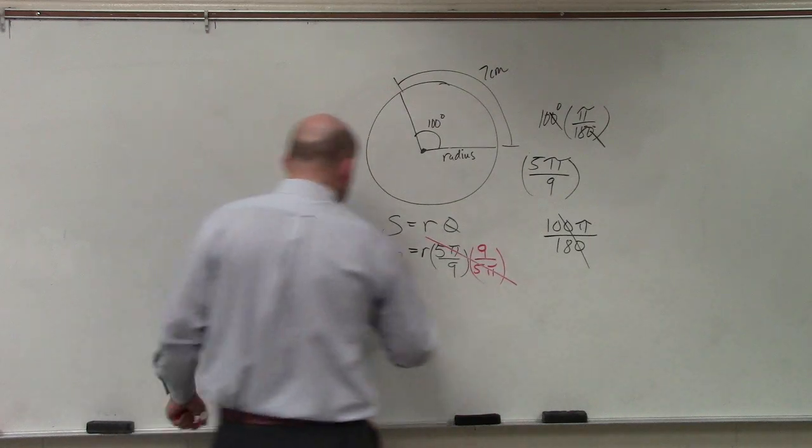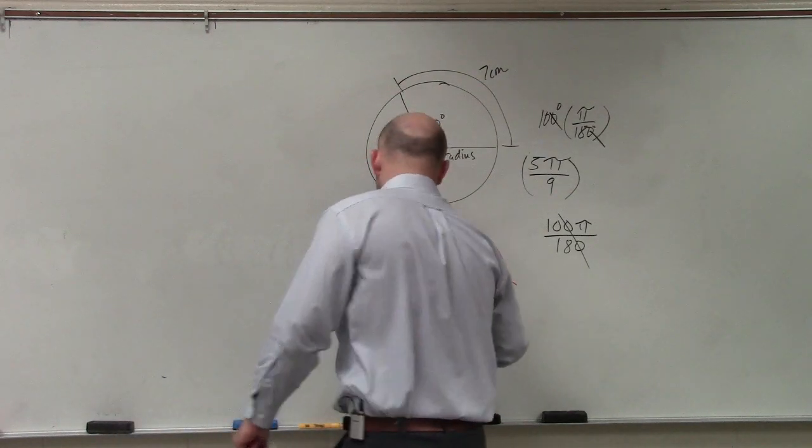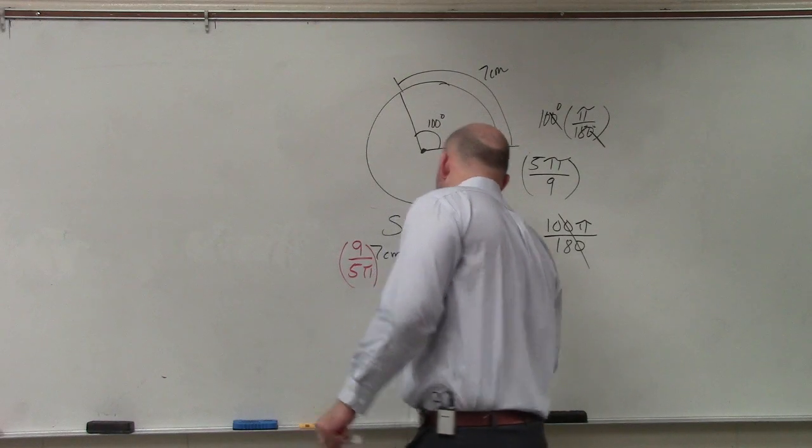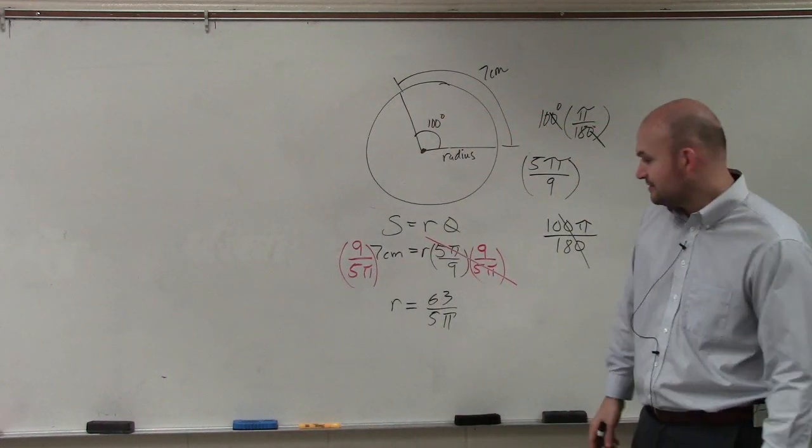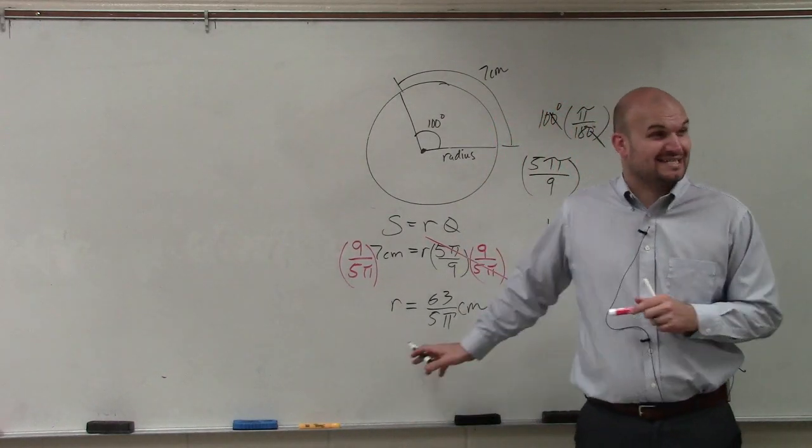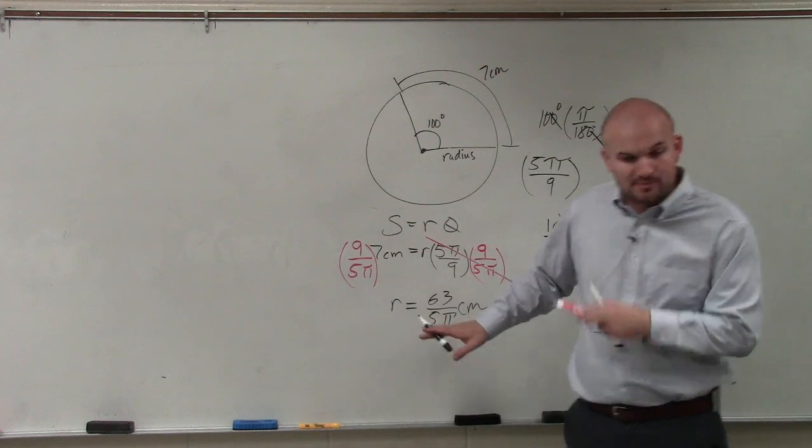So therefore, my final answer is going to be r is equal to 63 over 5 pi. So I multiply the 9 times the 7. And then, if they're asking for an exact answer, that's what my exact answer would be.